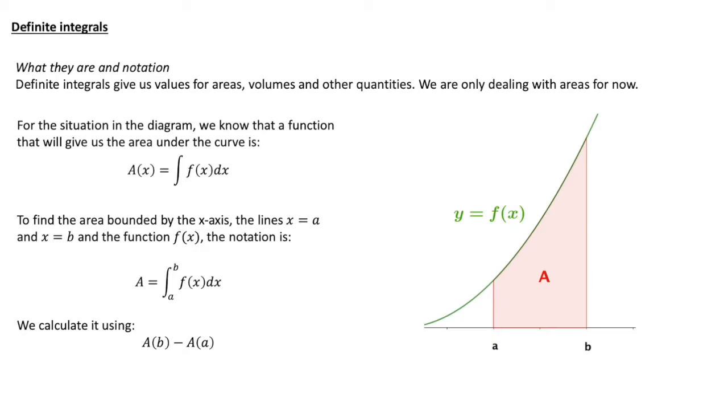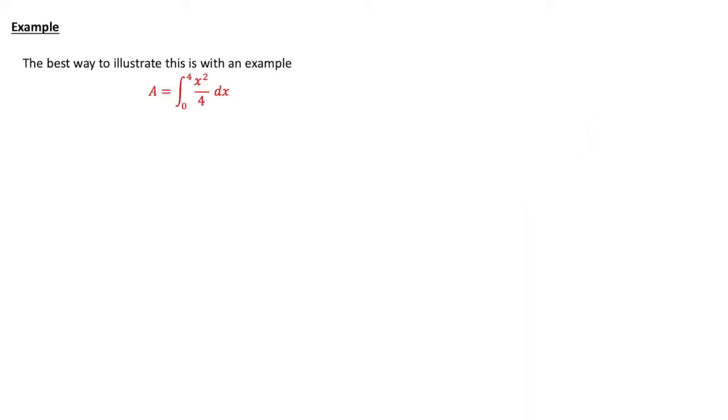We calculate it by using our antiderivative of f, or our indefinite integral of f, and we calculate it at b and then subtract it calculated at a. As is generally the case with maths, the best way to illustrate this is to use an example.